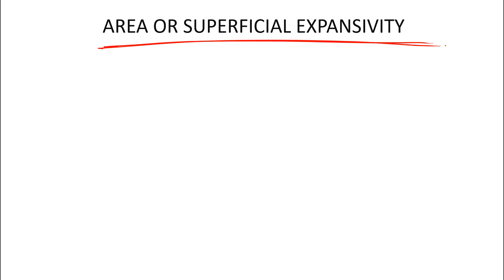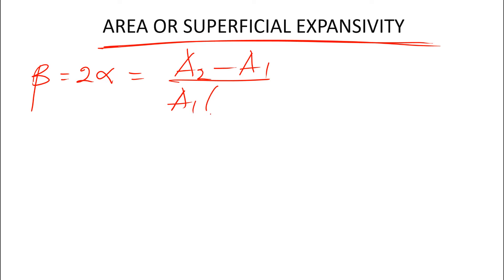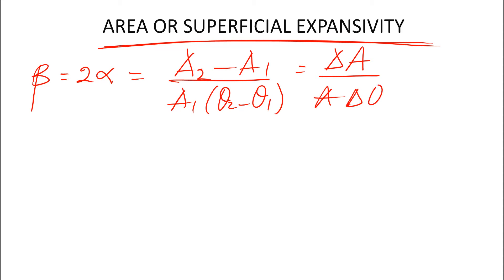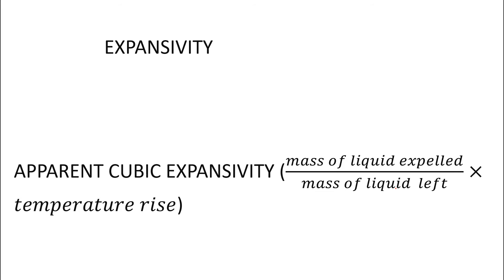Now we go to the one that takes place in liquid — area or superficial expansivity. The superficial expansivity is given as beta, which equals 2 alpha. That gives you increase in area over the original area times change in temperature. This is the formula for the area or superficial expansivity, and it takes place in liquid.